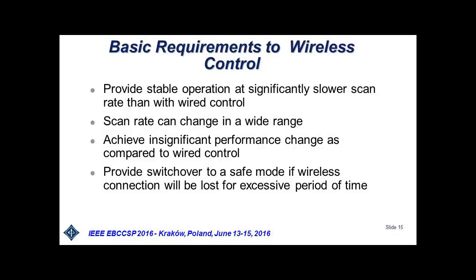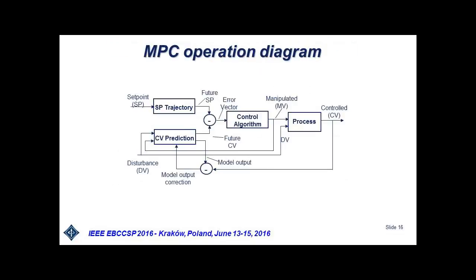A second basic requirement is to provide switchover to a safe mode if the wireless connection is lost. Since we applied wireless control with model predictive control, let me explain shortly how wireless connection works with MPC. MPC works based on a model. The model develops a prediction, and this is the prediction vector. Another element of MPC operation is the predictive trajectory — where we want our process outputs to be heading. The control algorithm develops control action based on the difference between the future process output trajectory and the predicted trajectory.